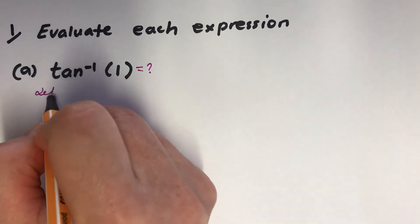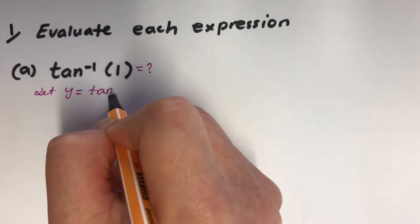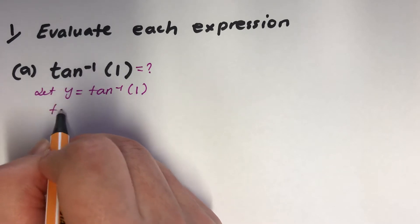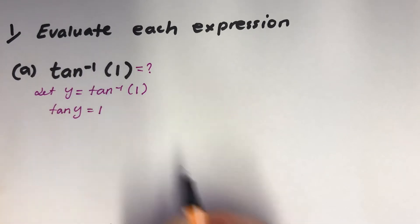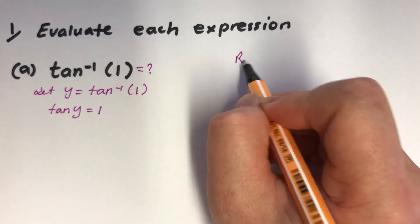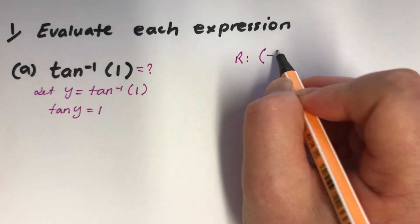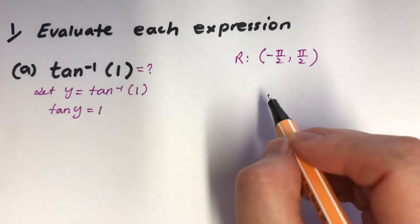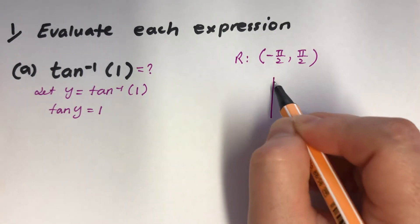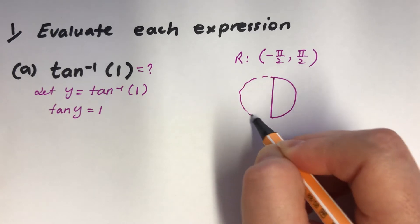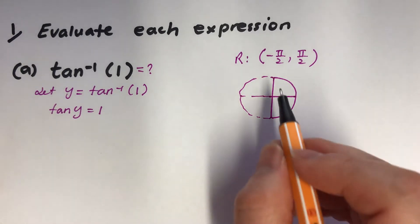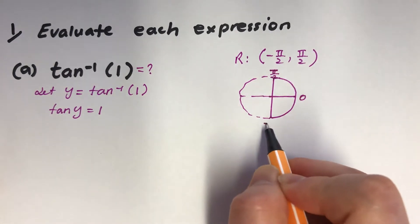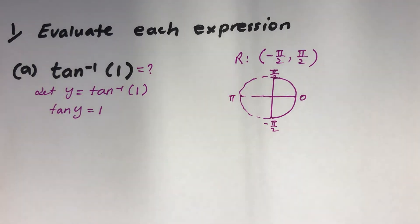I'm going to stop there and think about the range of tan. It's minus pi over 2 to pi over 2. Now this is the unit circle, so it would be 0, pi over 2, minus pi over 2.